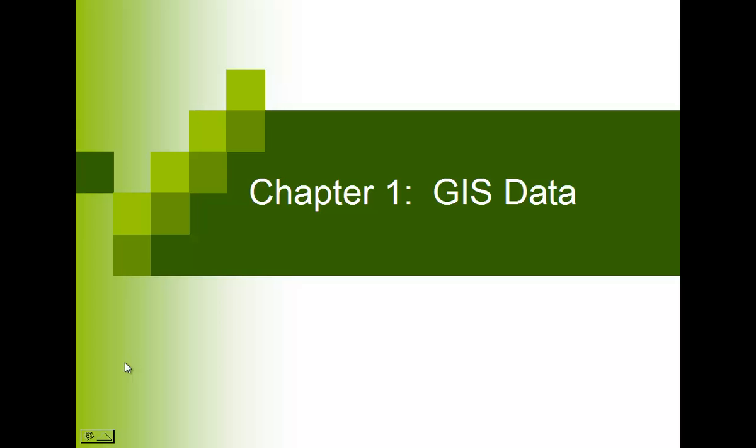Hi. In this short talk, we're going to talk about Chapter 1 from the book — basically, how do we represent real-world phenomena in the digital environment? It's pretty difficult, and we have a couple of different data models that will go through and do that for us. It's pretty interesting the way that geography and GIS is stored in a database. In this lecture, we're going to talk about how we store these data.